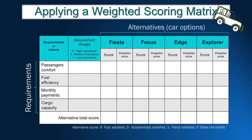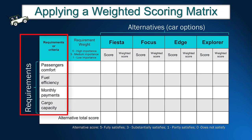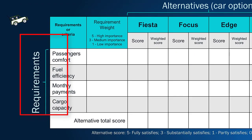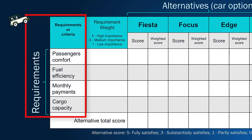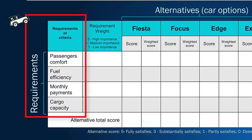The first step is to create a table with the requirements and possible alternatives. The requirements are listed in the first column. We summarized John's needs into four major requirements: passenger comfort, fuel efficiency, monthly payments, and cargo capacity.